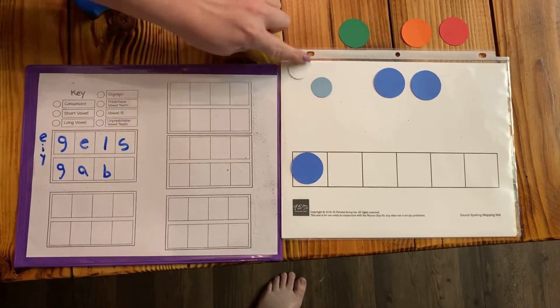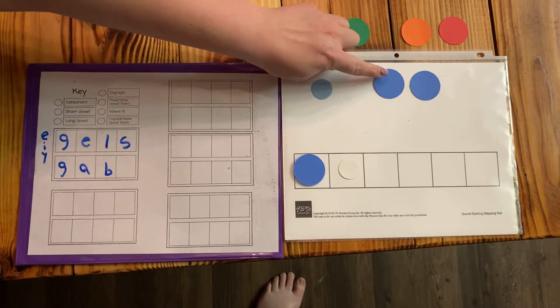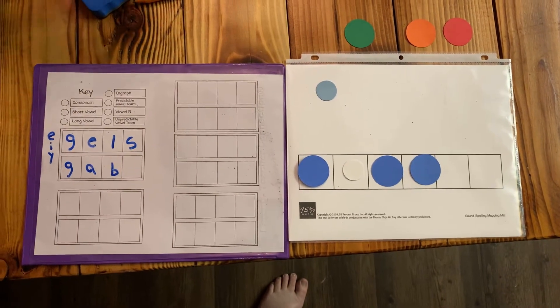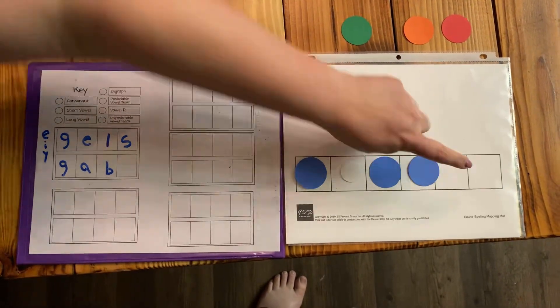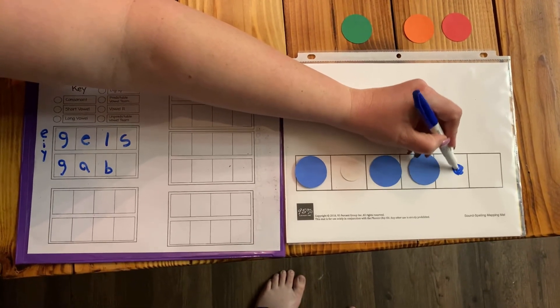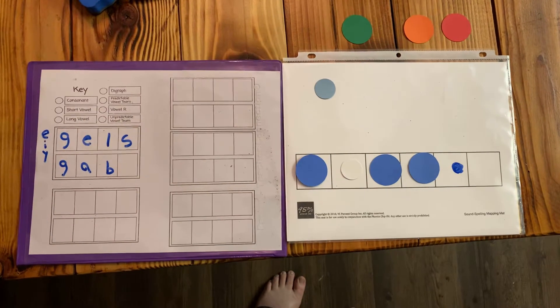Here we go, ready? M, a, j, i, and I actually need one more, friends, for my k, c here. We are one blue chip short. Sorry, friends. Magic.